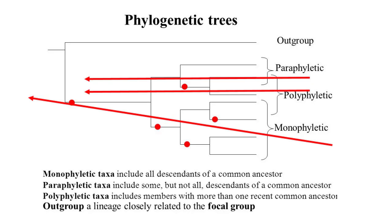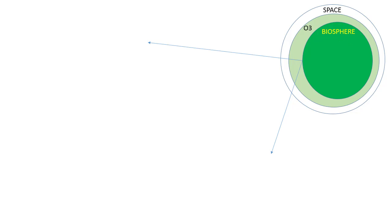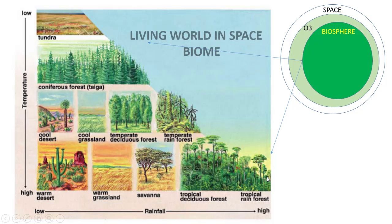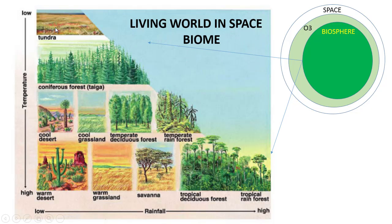The space above the ozone layer has no life, but the biosphere on Earth supports life. There are 9 to 11 biomes in the world. Terrestrial biomes include tundra (with no trees, only bushes), taiga (coniferous forest/gymnosperm), cool deserts, cool grasslands, temperate deciduous forests, temperate rainforests, warm deserts, warm grasslands, savanna, tropical deciduous forests, and tropical rainforests. Aquatic biomes include ocean, fresh water, and salt/halophyte conditions.